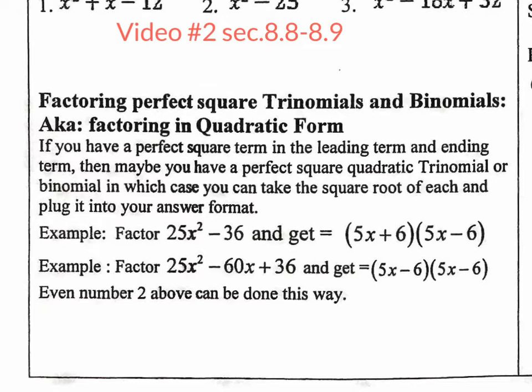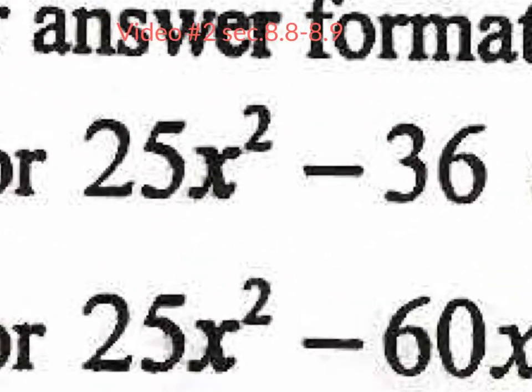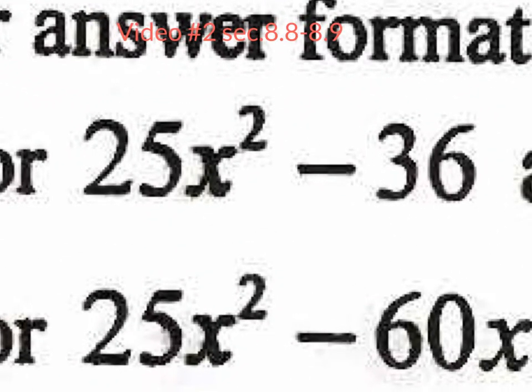So here's the deal. When we look at 25x squared minus 36, what's the first thing you should try to do? Greatest common factor. And there is no greatest common factor with the 25 or 36, so we're stuck. Now, the second thing to do is this new method I'm about to teach you. If you recognize that you have a perfect square term in the front and a perfect square term in the back, you might be able to apply a shortcut by doing square roots.